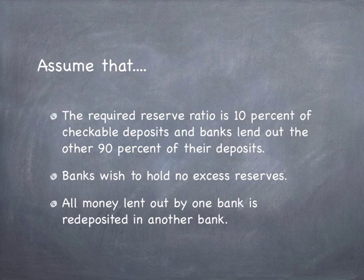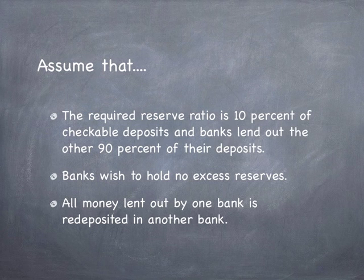Assume that the required reserve ratio is 10% of checkable deposits and banks lend out the other 90% of their deposits. Banks wish to hold no excess reserves, and all money lent out by one bank is redeposited in another bank.